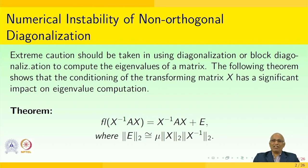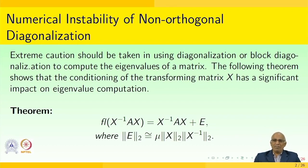This strategy is very useful in many applications. Apart from that, we also need to see the diagonalization process — how the diagonalization process is helpful to us, and how numerical stability can be computed for a particular application, which is very important for finding the best approximations. Extreme caution should be taken in using diagonalization or block diagonalization to compute the eigenvalues of a matrix. The following theorem shows that the conditioning of the transforming matrix X has a significant impact on eigenvalue computation.